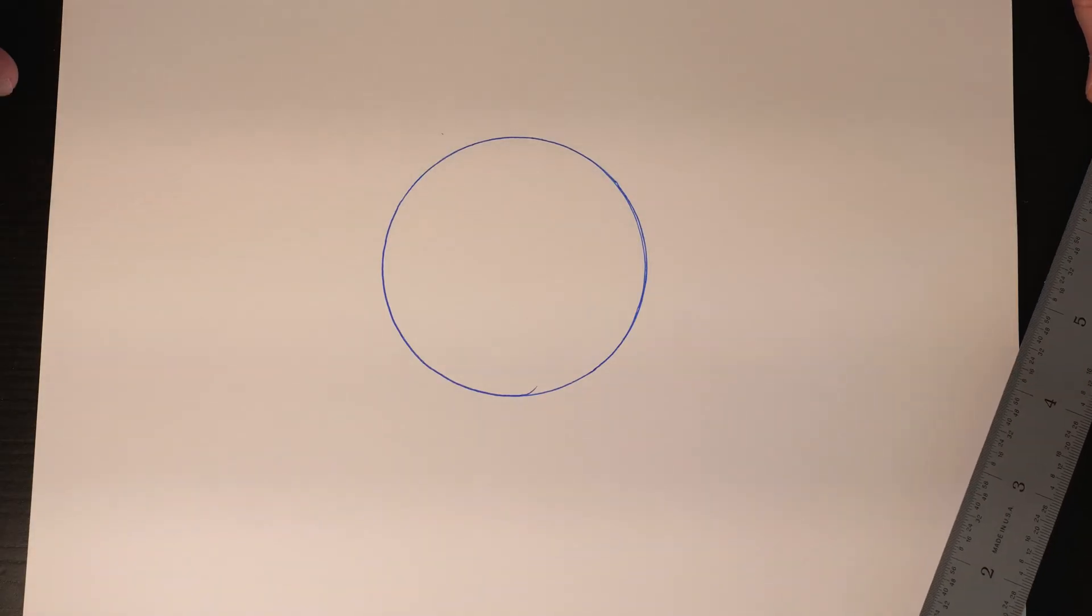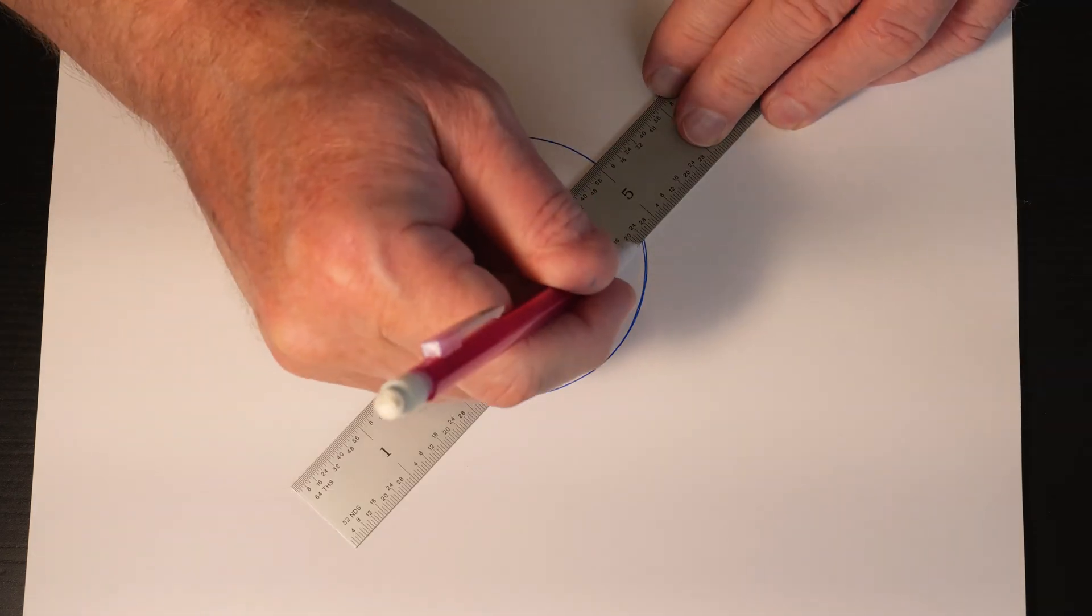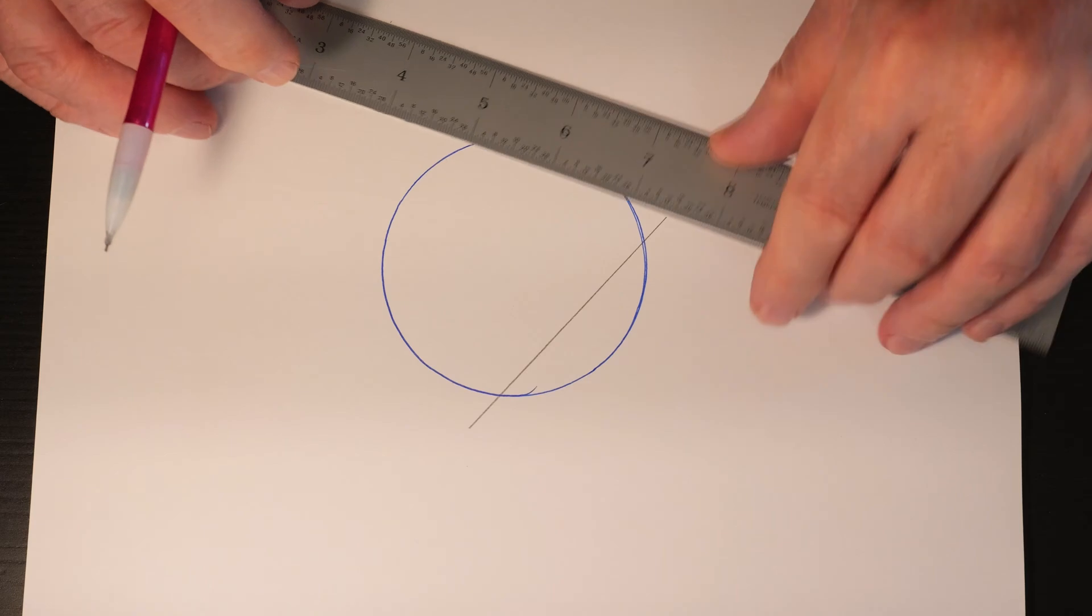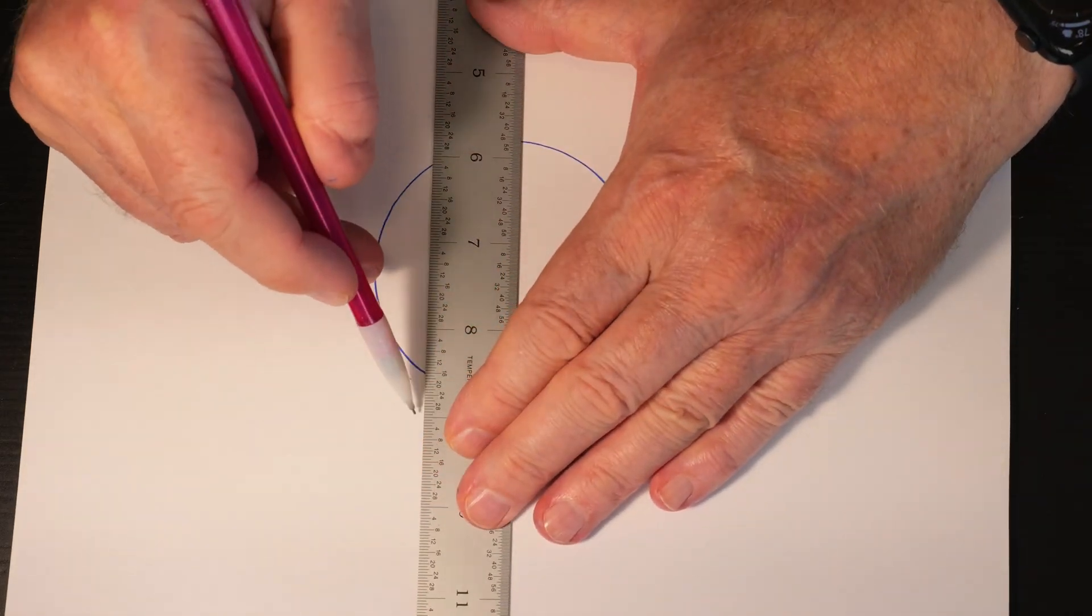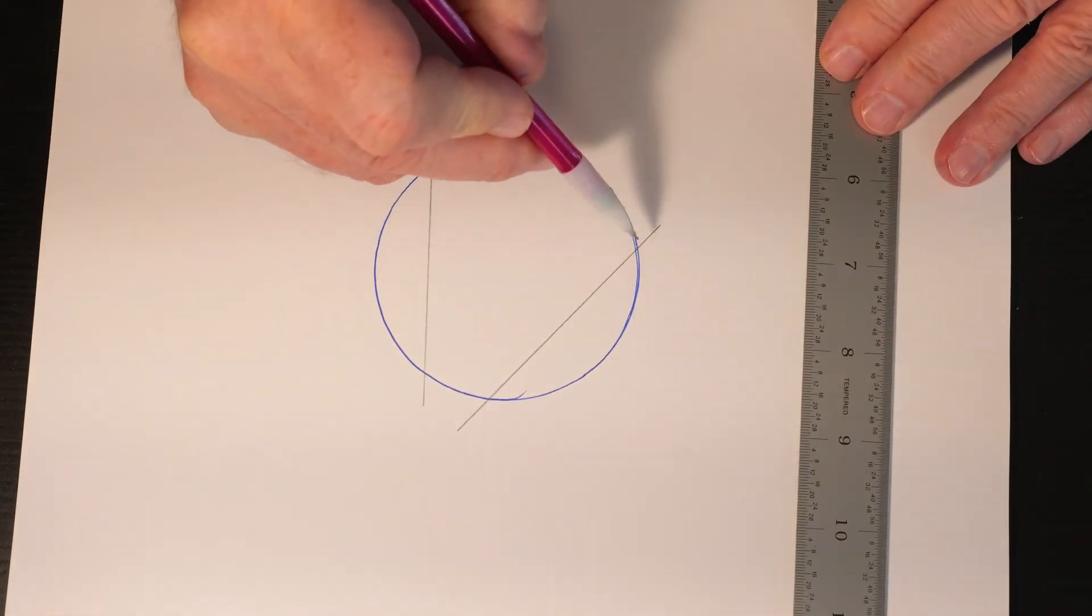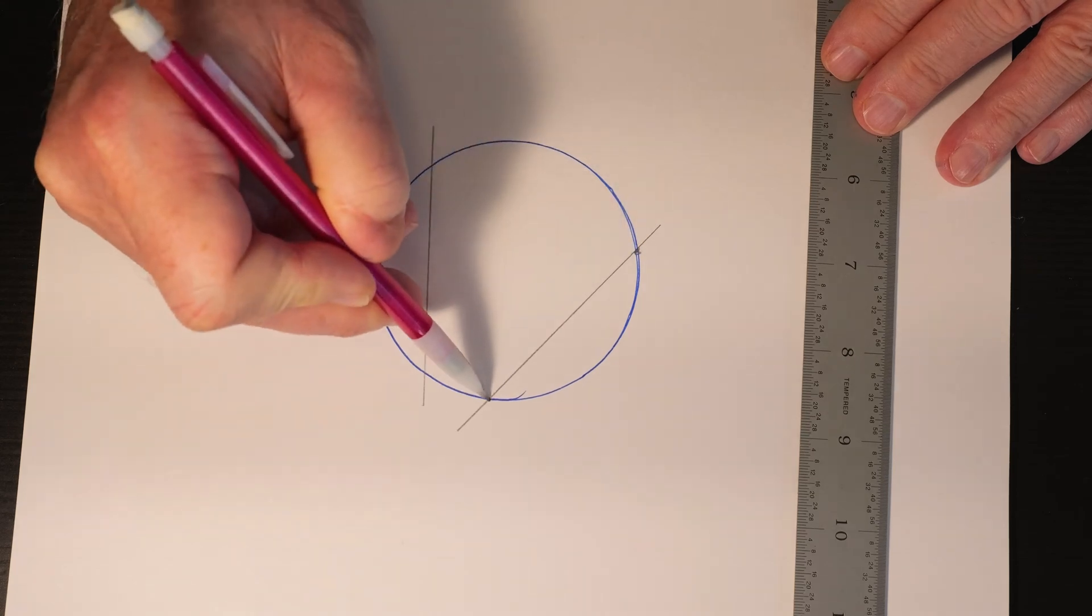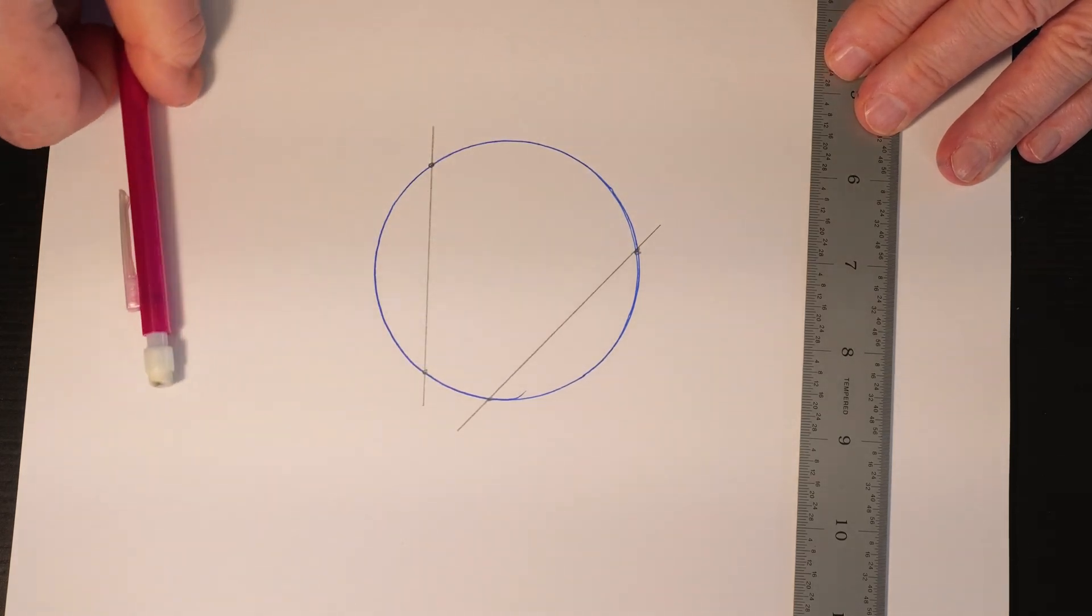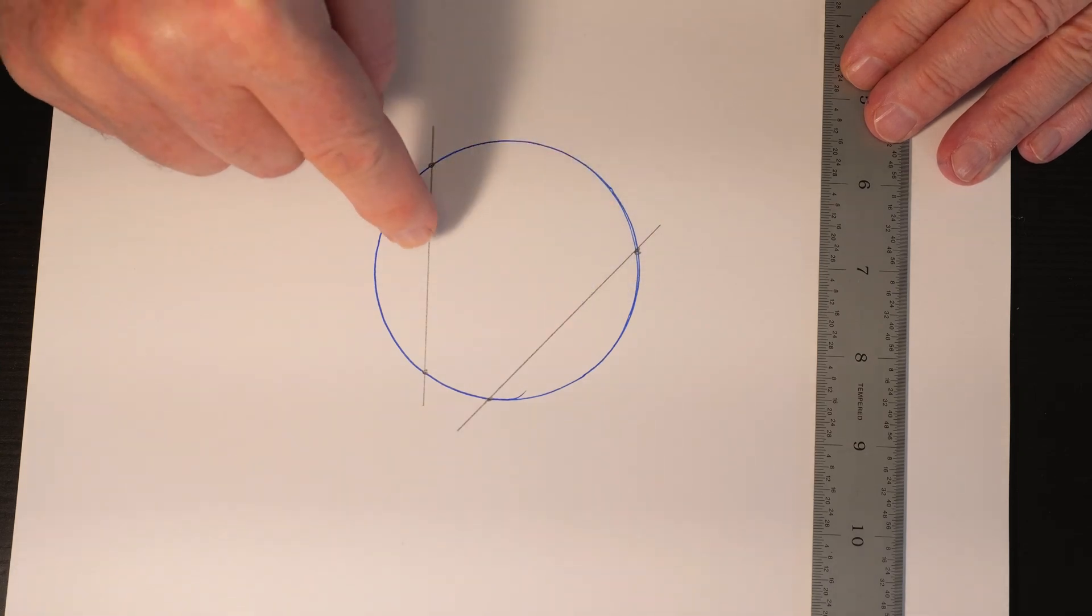Here's a quick way to find the center of a circle using just a straight edge and a compass. First, we're going to draw two lines across to create two chords, a chord being from the outside of the circle to the outside of the circle along that line.